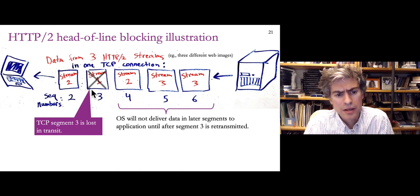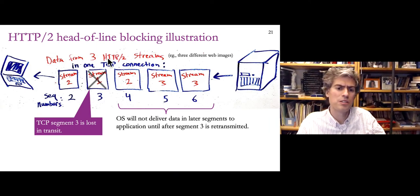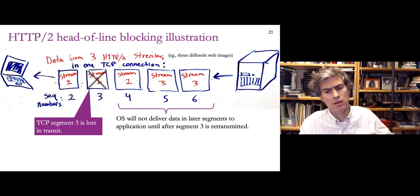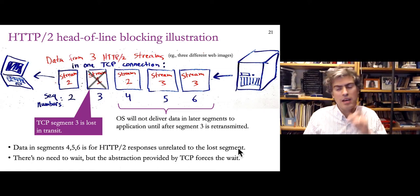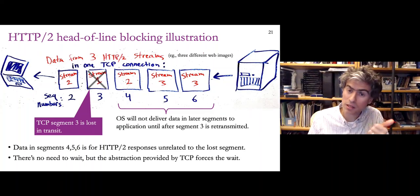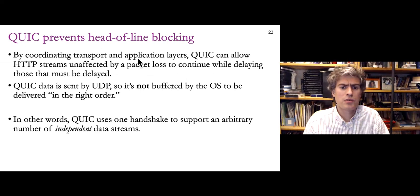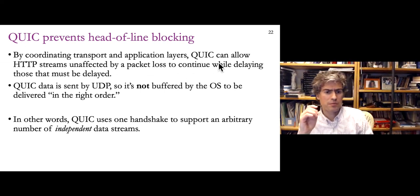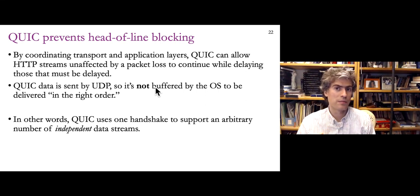Stream one should be delayed by the loss, but there's no reason streams two and three should be paused. The abstraction provided by TCP forces the wait anyway. QUIC solves this because it doesn't use TCP — it uses UDP. QUIC prevents head-of-line blocking by coordinating transport and application layers, allowing HTTP streams unaffected by a packet loss to continue while delaying only those that must wait. QUIC data sent by UDP is not buffered by the OS before delivery, so it arrives in whatever order it comes, and the application decides what to do with it.